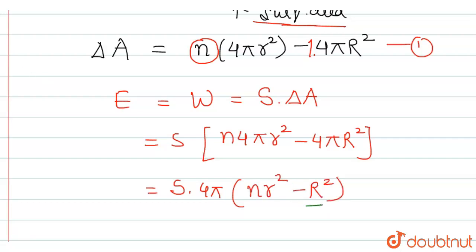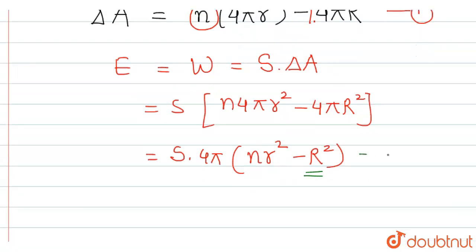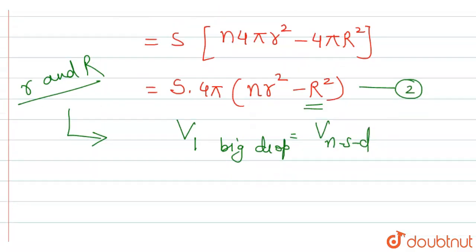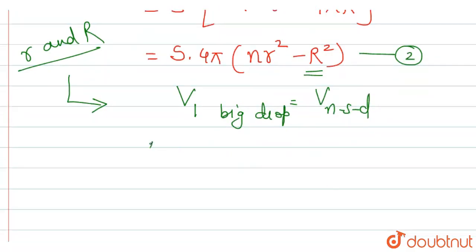According to the question only capital R is given to us. Therefore, we will be finding relationship between small r and capital R by using the concept whenever a drop breaks then the volume of one big drop is equal to the volume of n small drops. Therefore, we can take the volume of one big drop as 4 by 3 pi R cube and this is equal to n into volume of one small droplet is 4 by 3 pi into small r cube.